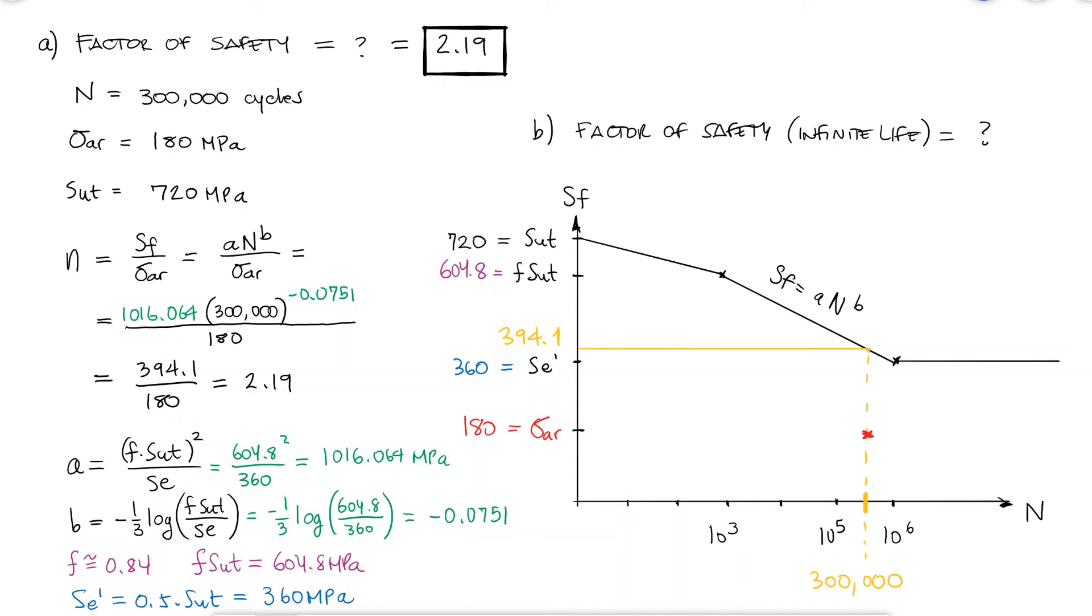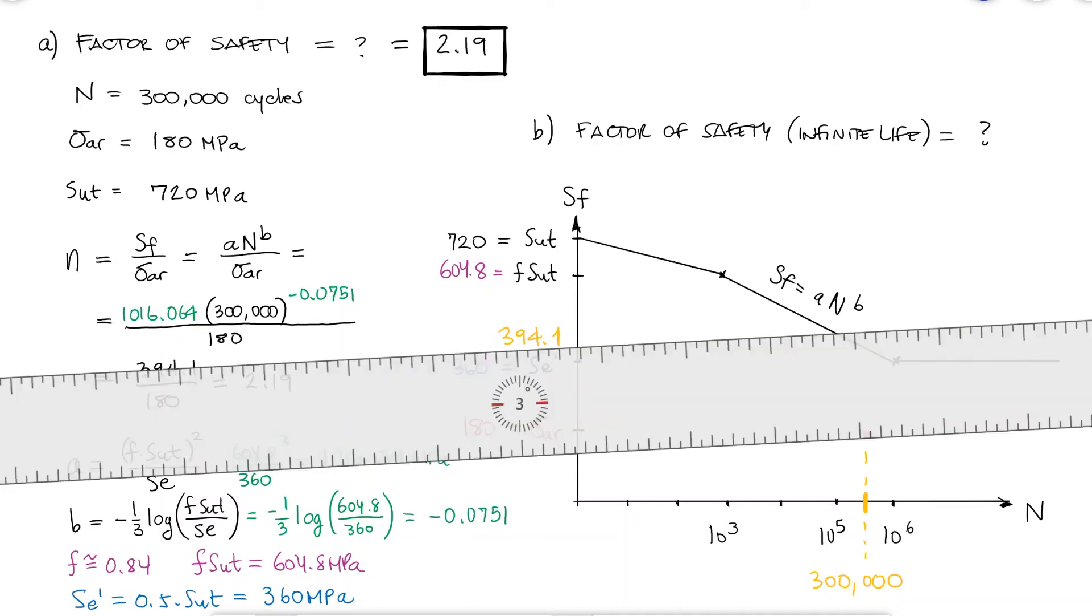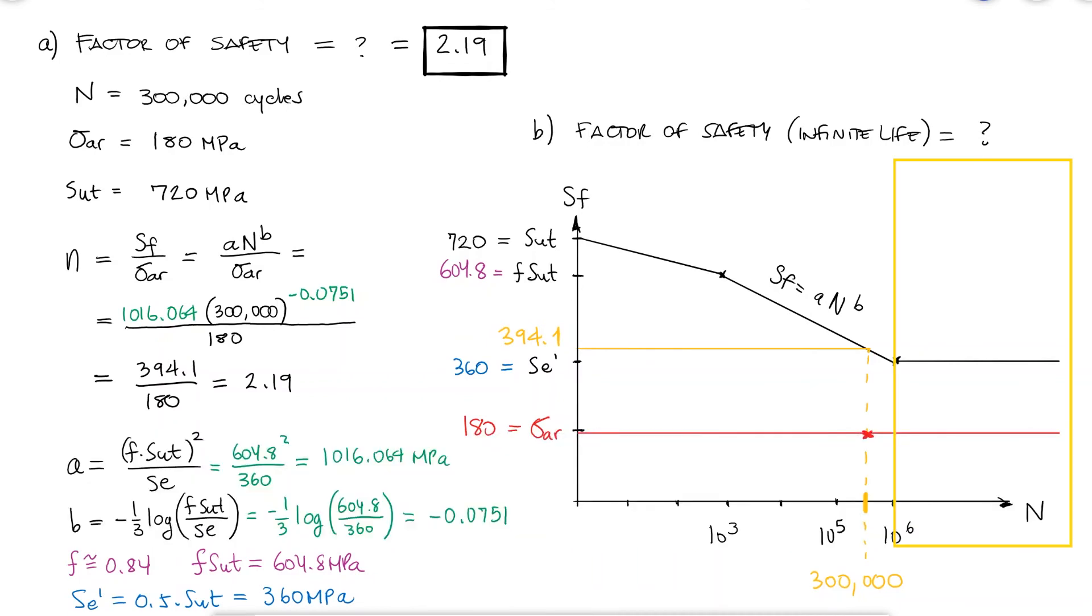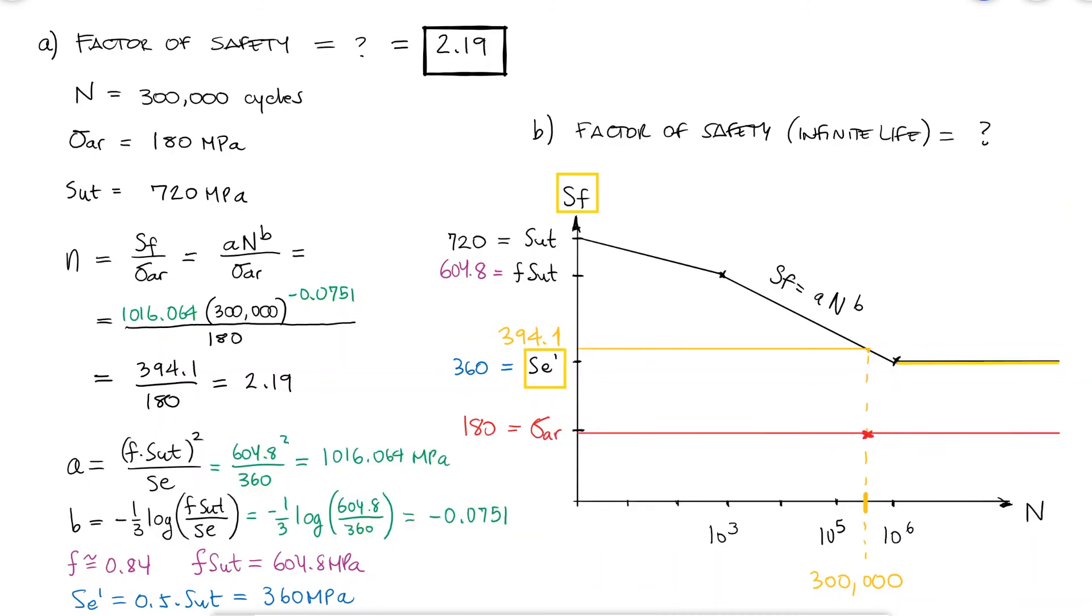The factor of safety for infinite life, which for steels usually means more than 1,000,000 cycles, would be the fatigue strength for more than 1,000,000 cycles, which is the endurance limit, over the current completely reversed stress.